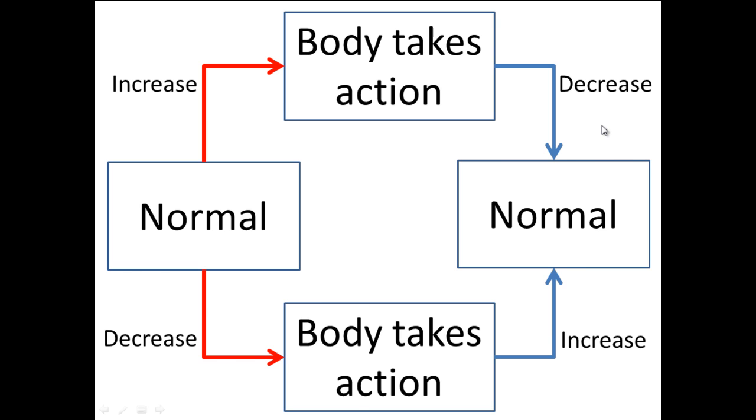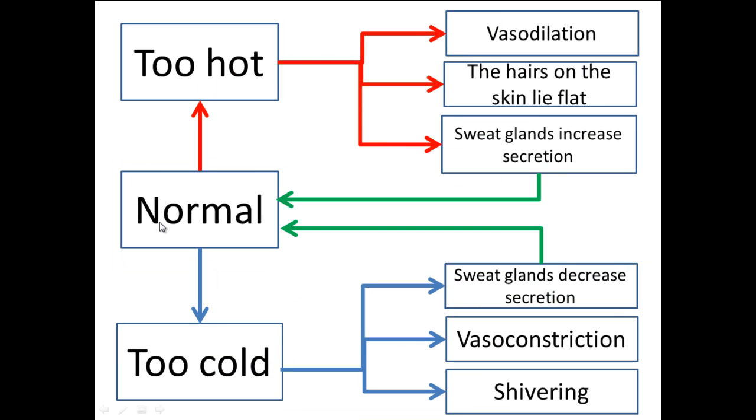So we're going to have a look at how thermoregulation takes place now. Here you've got your normal stable internal environment—that's 37 degrees Celsius. Let's say you get too hot. Receptors detect those changes within the skin and also within the blood, and information is sent to your hypothalamus.